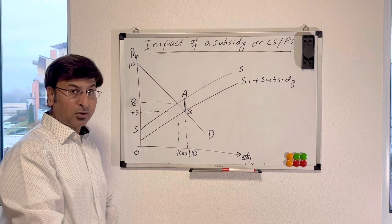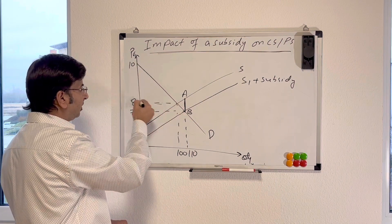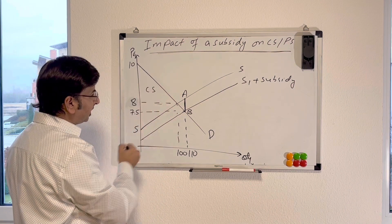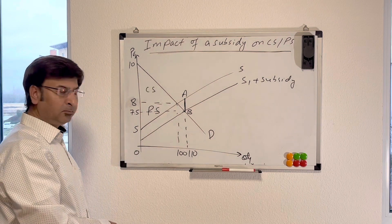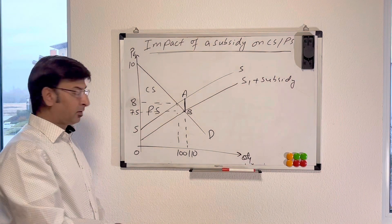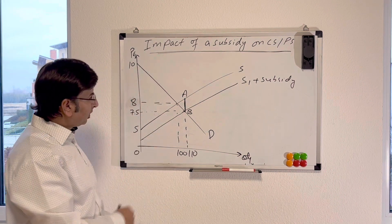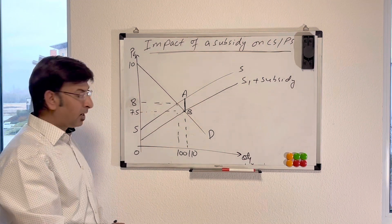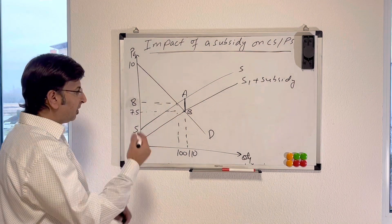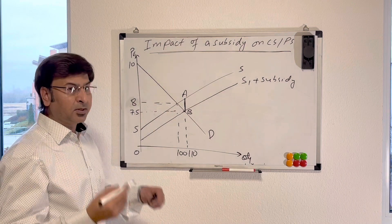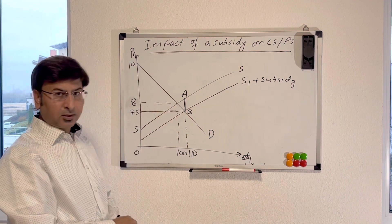Before showing consumer and producer surplus after the subsidy, just a recap: consumer surplus before the subsidy is this triangle, and producer surplus is this triangle. Now let's see what happens to consumer and producer surplus after the subsidy is granted. The new price is 7.5, and you can see that after the subsidy the consumer pays a lower price, so the consumer surplus increases. This new larger triangle is the consumer surplus after the subsidy.